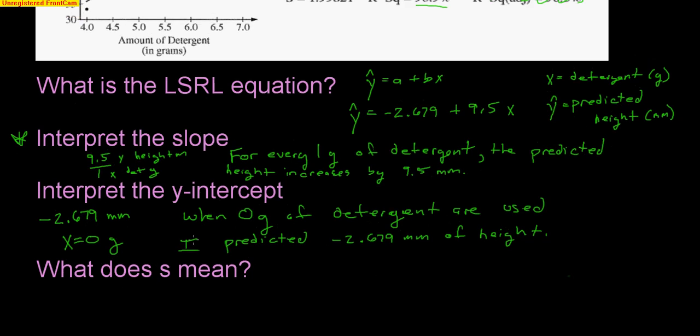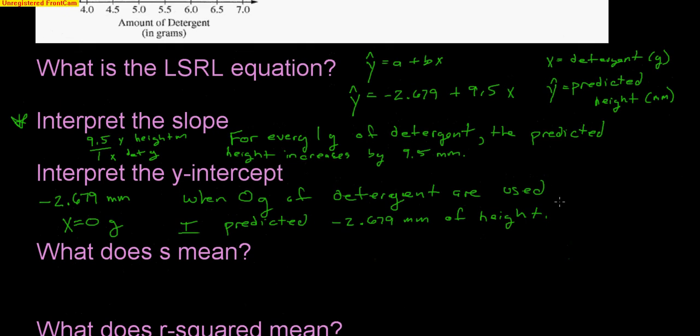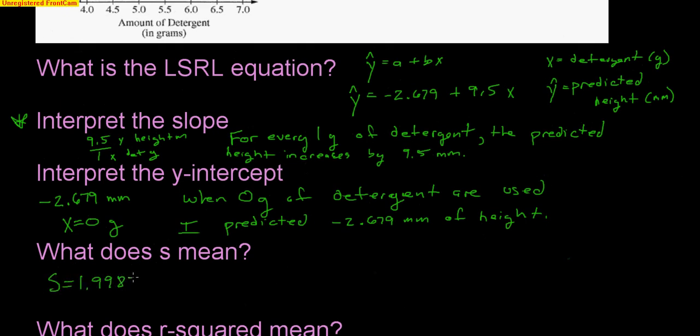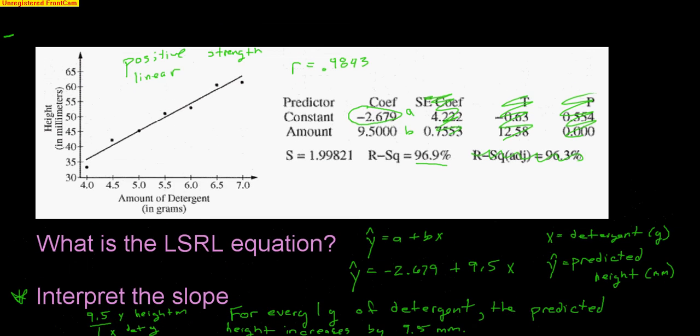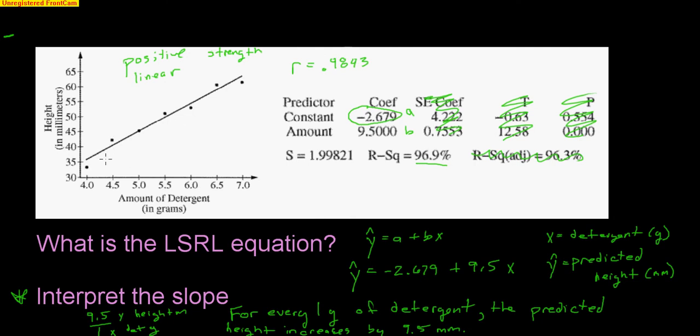All right, what does S mean? Well, S, again, it's in the chart. It's right there. It's the 1.99821. So I'm going to write that down first. 1.99821. S is the standard deviation of the residuals. Standard deviation of residuals. All right, let's recap what this was. Now, remember, a residual is how far the line is from the actual dot. So I have seven dots here. So there's a residual here. How far? All of these are residuals. So some residuals are positive. Some residuals are negative.